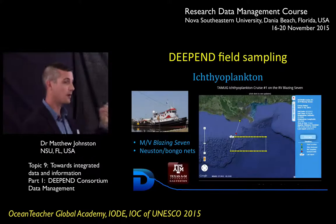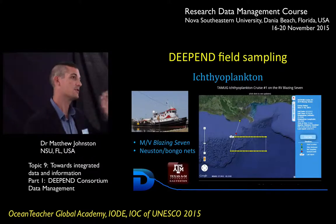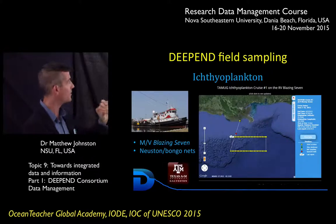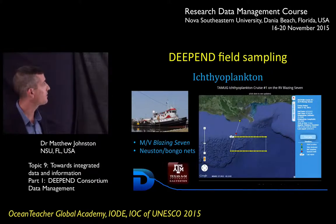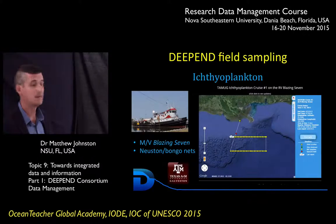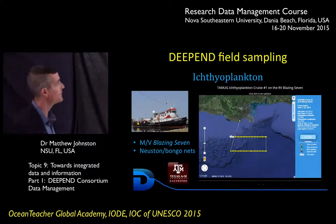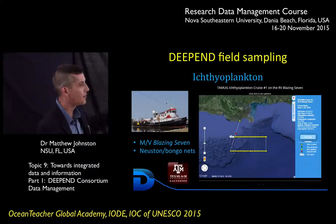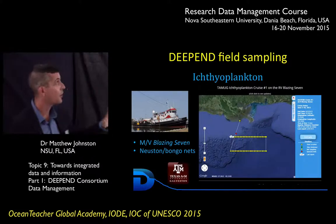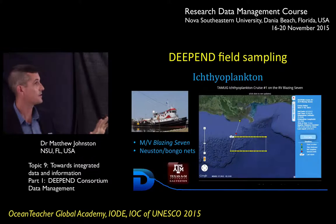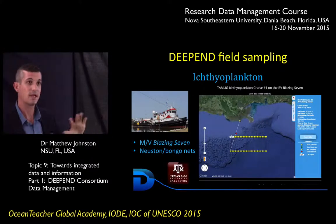We're also sampling the ichthyoplankton, which are small fish in the surface layers. This is done out of Texas A&M University, and they use something called the Neuston and Bongo net. This was one of their cruise tracks. They've also had two cruises so far this year. There's going to be a total of 12 cruises, and each one is normally for a period of about 10 days.